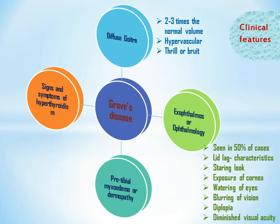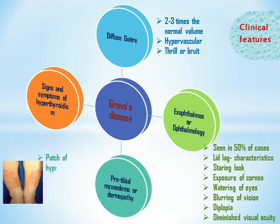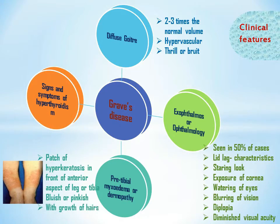Signs of ophthalmopathy include lid lag, diplopia or double vision, exposure keratitis, and diminished visual acuity. Lid lag is the common and characteristic sign, demonstrated by asking the patient to look downward and then suddenly upwards. Normally there is synchronization of lid and eyeball movement, but in Graves disease the lid lags behind the eyeball movement. Pretibial myxedema is a patch of hyperkeratosis on the anterior aspect of the leg or tibia, bluish or pinkish in color with growth of hairs.